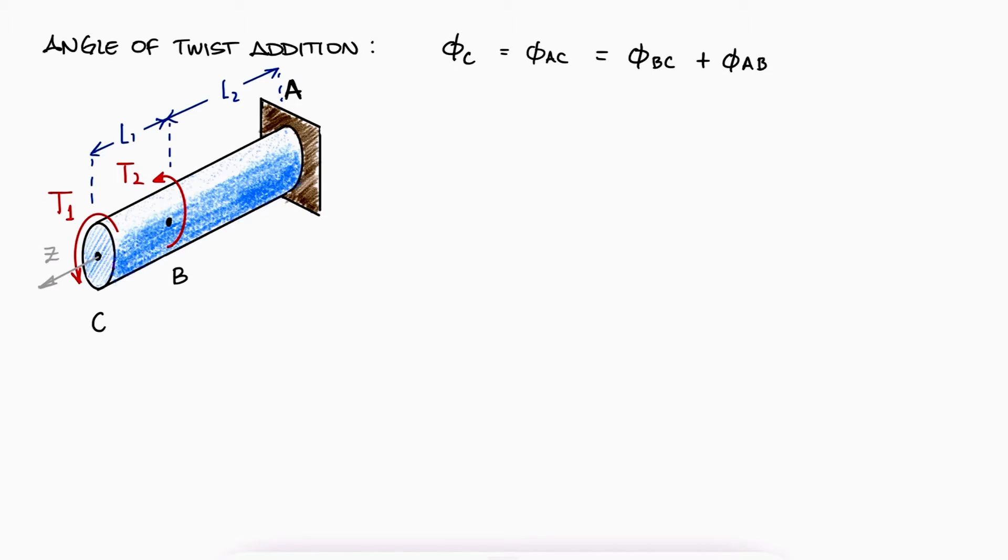This process is almost identical to the sub-indices that we used for axial deformation. We can write phi in terms of the expression we just developed, and we can see that the torque from B to C is also minus TCB.